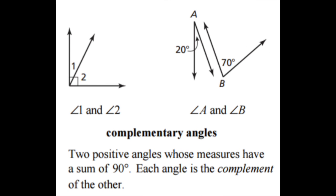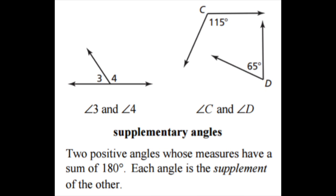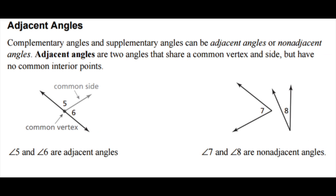We're going to start by defining three words. The first is complementary angles — two angles that add up to 90 degrees. The next is supplementary angles — two angles that add up to 180 degrees. The next word is adjacent angles — two angles that share a common side or a common ray. Angle five and angle six would be an example of adjacent angles, and angle seven and angle eight would be an example of non-adjacent angles, where they do not share a side.